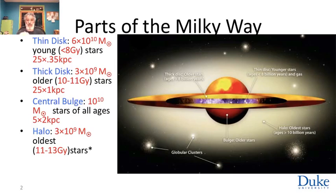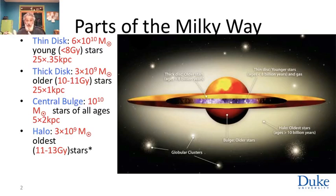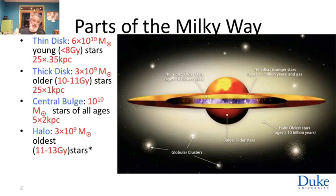The disk is broken up into two different components — a relatively recent find. There is a thin disk, only about a third of a kiloparsec, roughly 300 parsecs thick, or a thousand light years, with a radius of about 25 kiloparsecs. The Sun, being eight kiloparsecs from the center, is about a third of the way to the edge. The thin disk has the bulk of the stellar mass — about 60 billion solar masses — and the stars are by and large young, with ages less than eight billion years. So the Sun is certainly a young star.